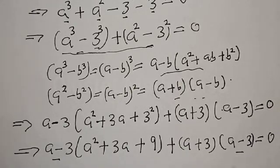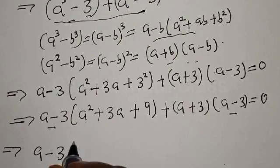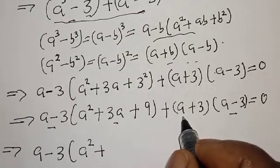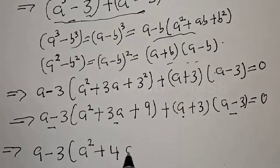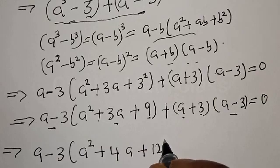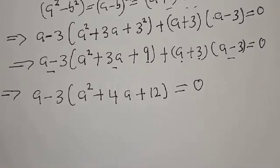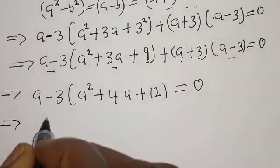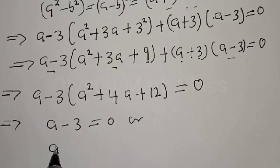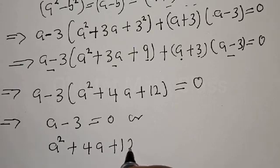We have a minus 3 here and a minus 3 here, which is a common factor. This implies that we have a minus 3 times the quantity a squared plus 3a plus a plus 3, giving a squared plus 4a plus 12, equal to zero.